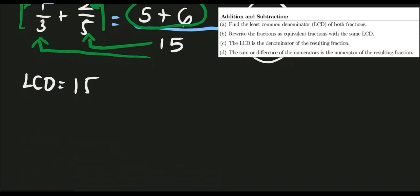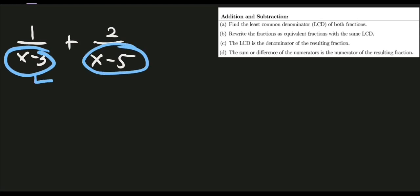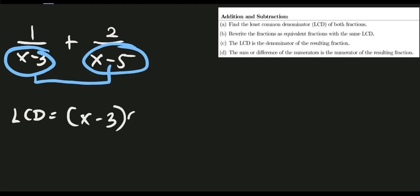Let's try to solve another problem. We are asked to add rational expressions with variables in the denominator: one over (x minus 3) plus two over (x minus 5). Same procedure — step one is to identify the least common denominator. We'll use both denominators, x minus 3 and x minus 5, and multiply them together to get our LCD.